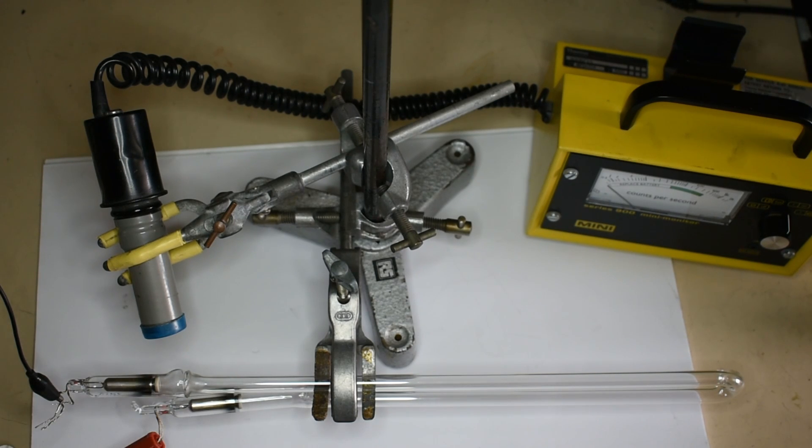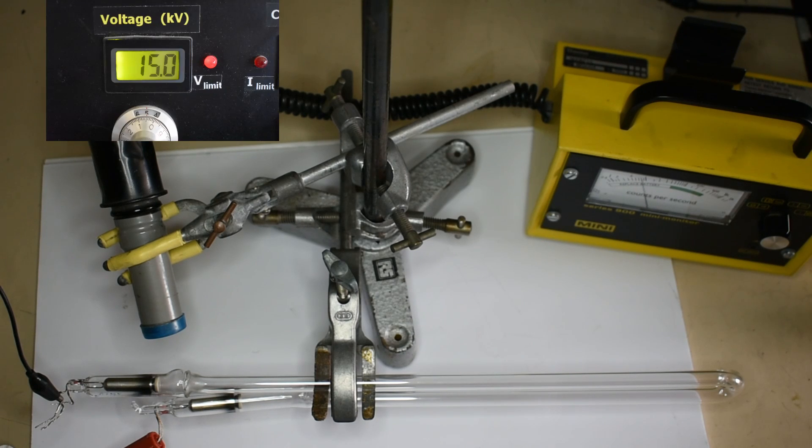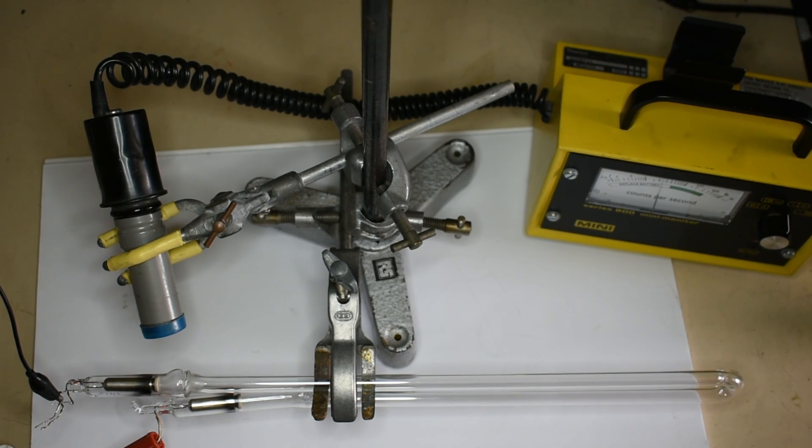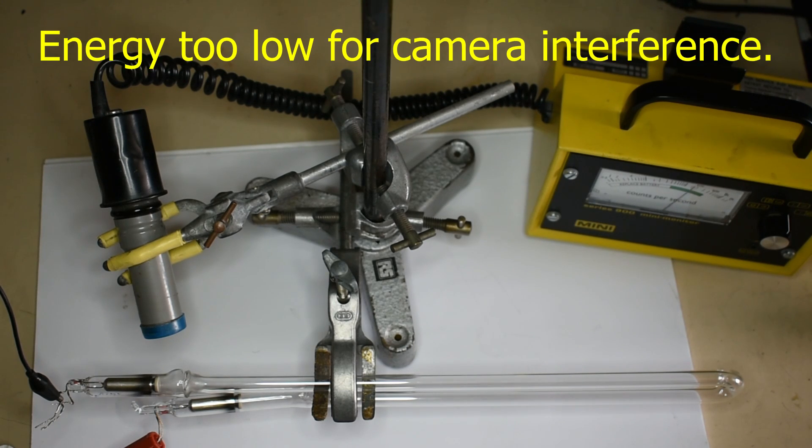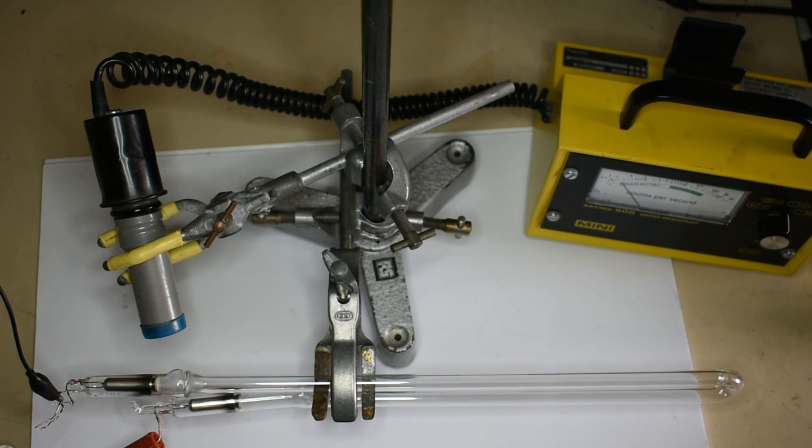This will be anode and cathode and we're pointing the detector around about this part here. So if I put the supply voltage on, that's 10 kV across the tube, and that's 15 kV, and we are getting 50 counts per second. 18 kV, that alarm says full scale which is 2000 counts per second.